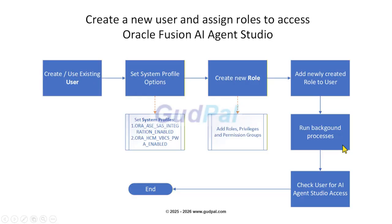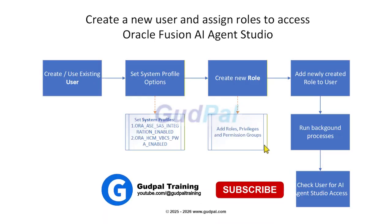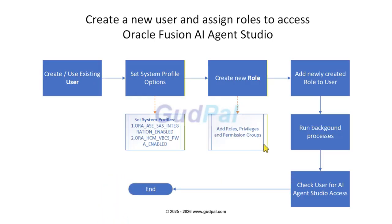In this flowchart, you can see you create or use an existing user, then you've got to set a couple of system profile options listed below. Once you do that, you create a new custom role and add certain additional roles, privileges, and permission groups specific to Oracle Fusion AI Studio.